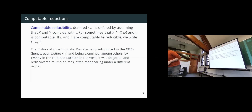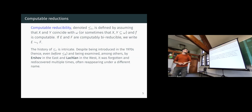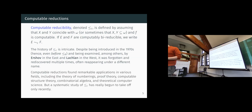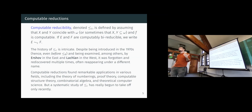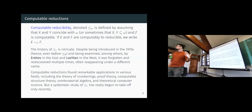The history of computable reducibility is more intricate. It was introduced in the 70s — even before Borel reducibility — examined by Hirschfeld in the east and Lachlan in the west, and a lot of leading logicians, yet it was forgotten and rediscovered multiple times. It's a very natural notion that would be reasonable to appear a number of times. It found connections with the theory of numberings, applications in metamathematics of arithmetic, computable structure theory, combinatorial algebra, and more. More recently, a number of people — myself included — started studying the abstract theory of computable reducibility.